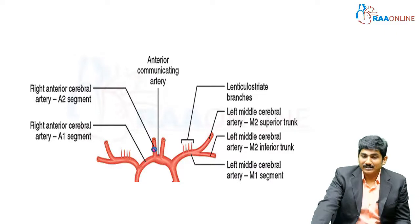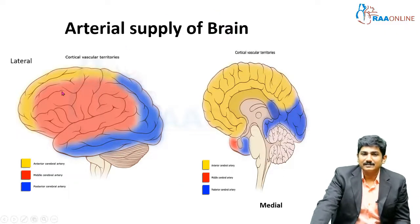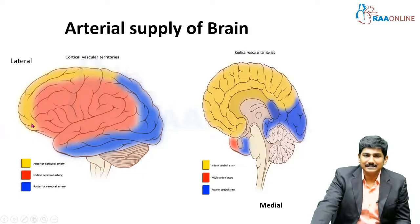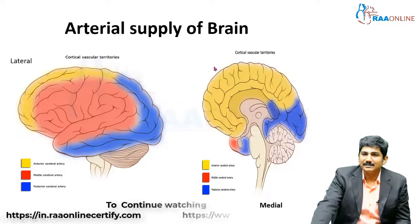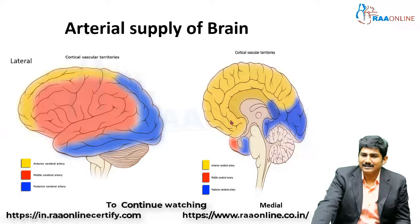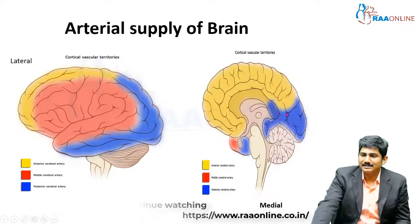So we should know what the A2 segment supplies. This is the arterial supply of the brain — this is the lateral surface and this is the medial surface. On the lateral surface, the yellowish area is supplied by the anterior cerebral artery, the middle area is supplied by the middle cerebral artery, and the blue segment is supplied by the posterior cerebral artery. On the medial surface, a huge area is supplied by the anterior cerebral artery, with very minimal middle cerebral artery territory, and the blue area is the posterior cerebral artery.